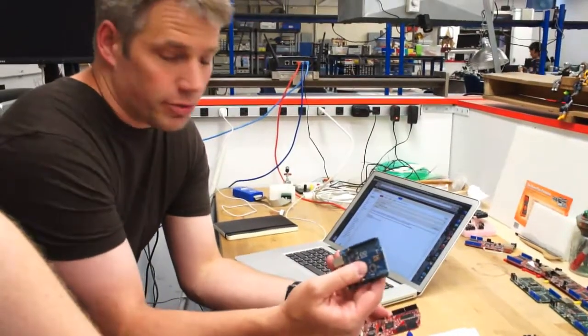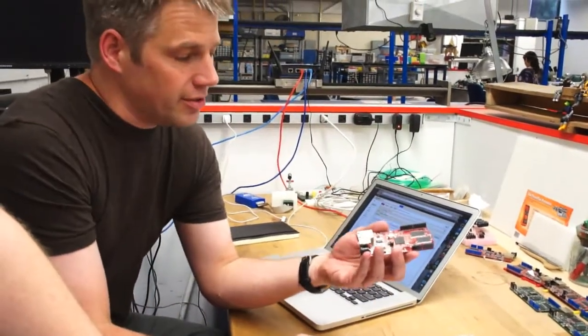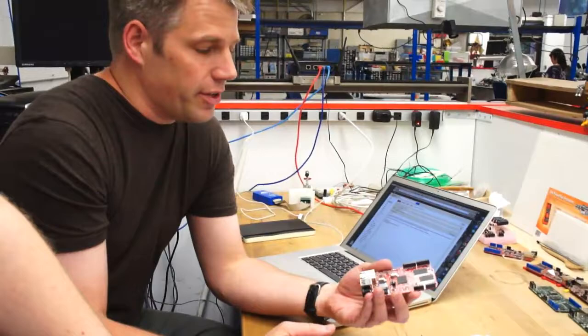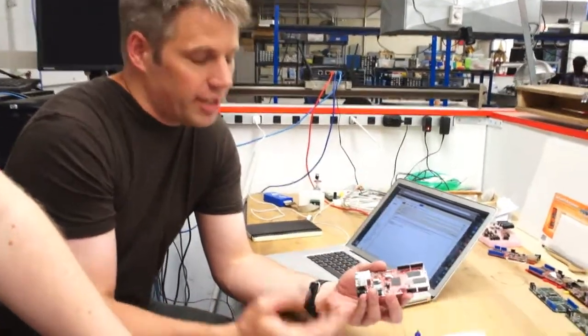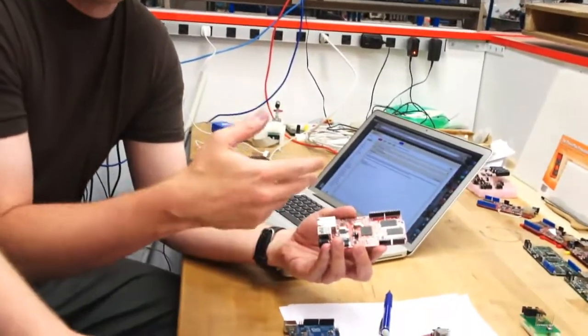So you can see it's bigger, but the big thing is it can handle real web traffic. So any shield that you could plug into an Arduino, you can also plug into a Rascal. And then it comes with a real web framework. It runs Python, has a web server built in, along with its own editor.